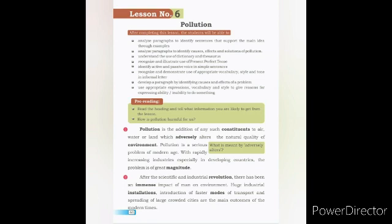Any such constituents to air, water or land — hawa, pani or zameen mein — which adversely alters — jo buri tarah se — the natural quality — qudrati khubsurti — of environment — mahol ki. Aloodgi aisi anasir ka hawa, pani ya zameen mein shamil hona hai jo mahol ki qudrati khasiyat ko buri tarah se badal deti hai. Pollution is a serious problem — aloodgi ek sanjida masla hai — of the modern age — jadeed daur ka. With rapidly increasing industries, especially in developing countries — khas taur par taraqqi pazeer mamaalik mein — the problem is of great magnitude — yeh masla badi shiddat se hai.